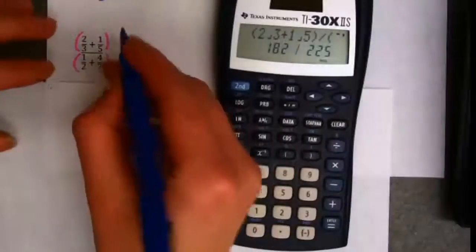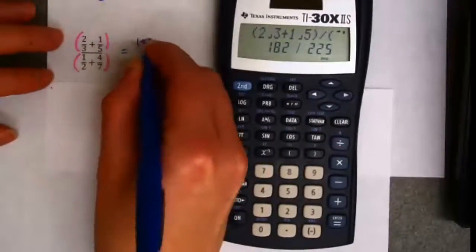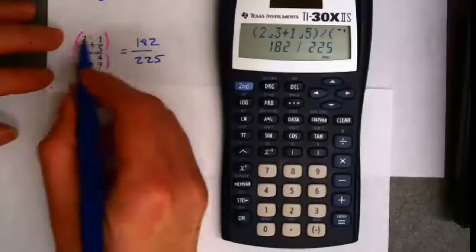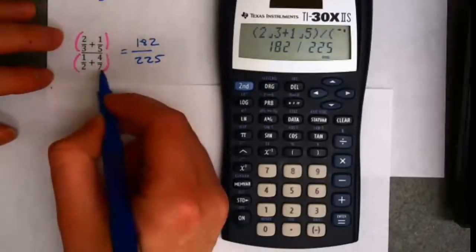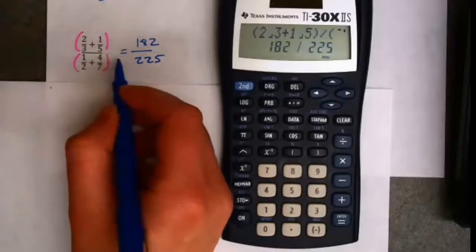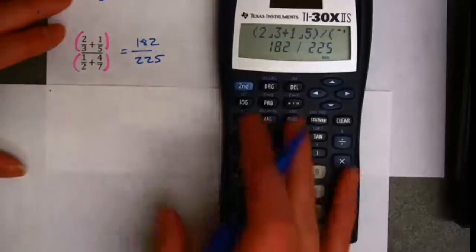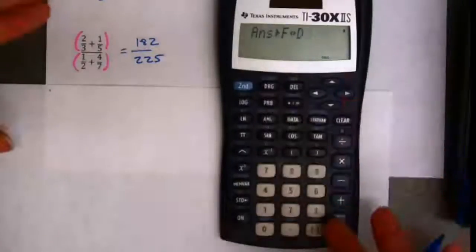So that's a huge time saver for me. It's found all the common denominators, added everything in the top, added everything in the bottom, as you would do with order of operations, and simplified the fraction. If I want to know what that value is as a decimal, I can flip back and forth.